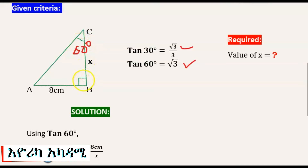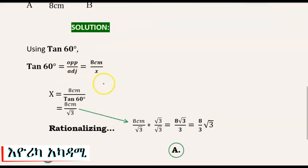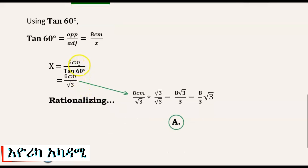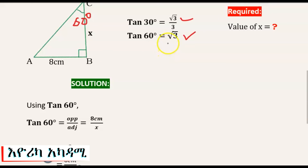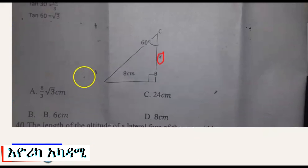This has a 90-degree corner and a 60-degree angle. Using tan 60 equals opposite over adjacent: opposite is 8 centimeters and adjacent is x. So x equals 8 centimeters divided by tan 60. Since tan 60 equals radical 3, x equals 8 over radical 3 centimeters.